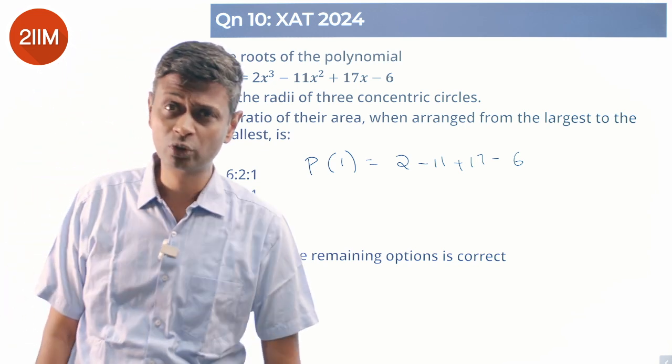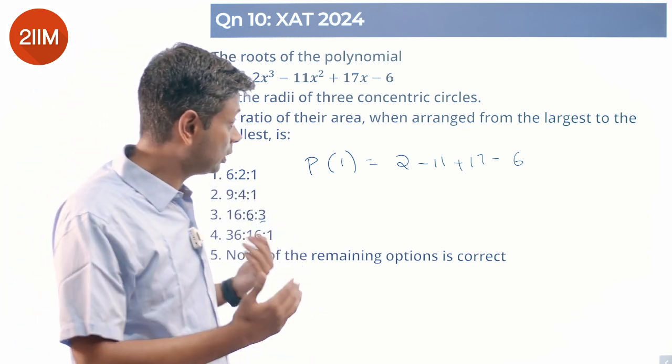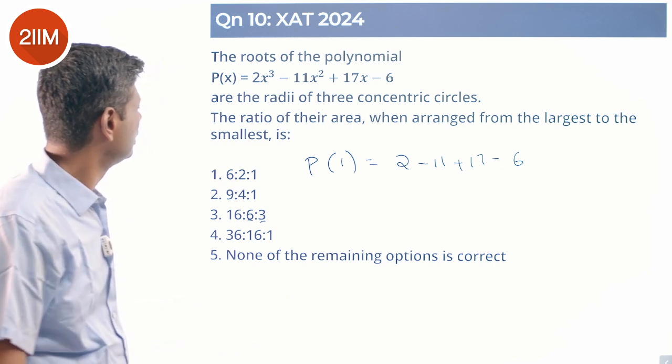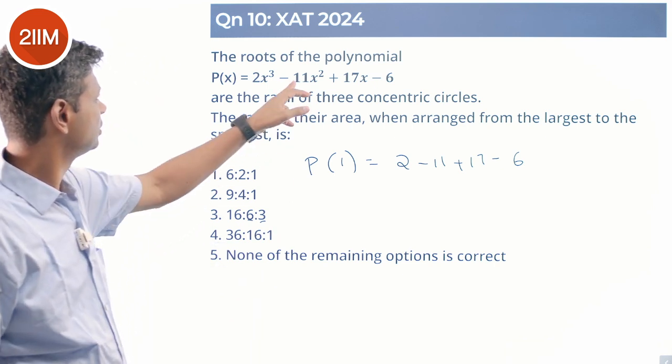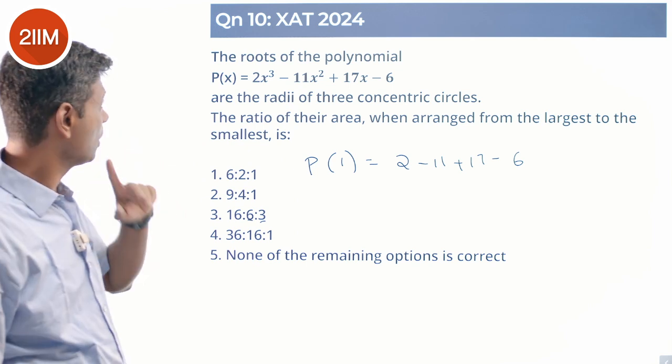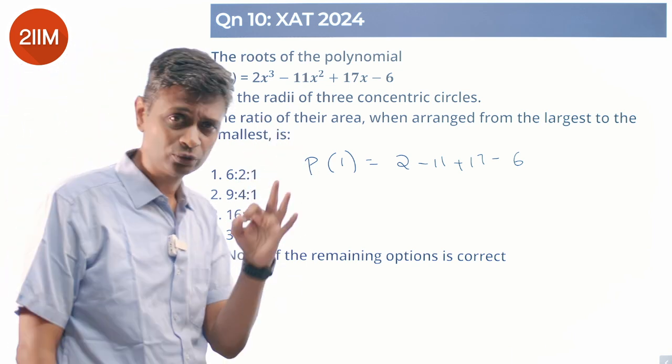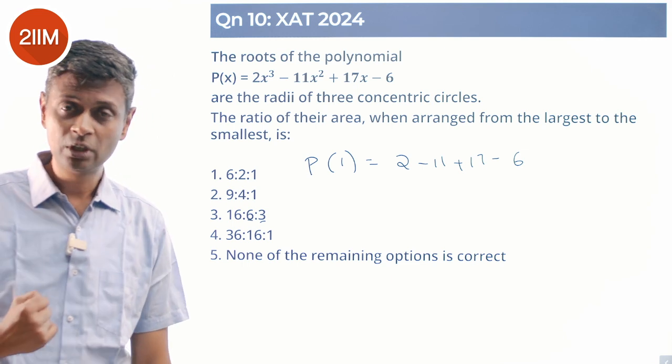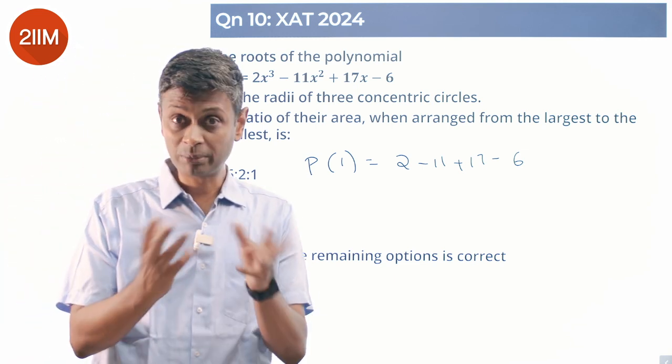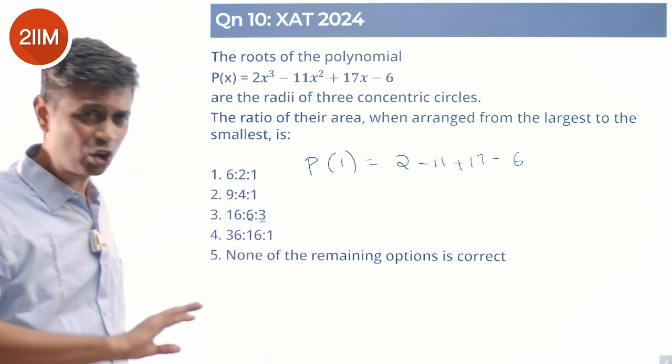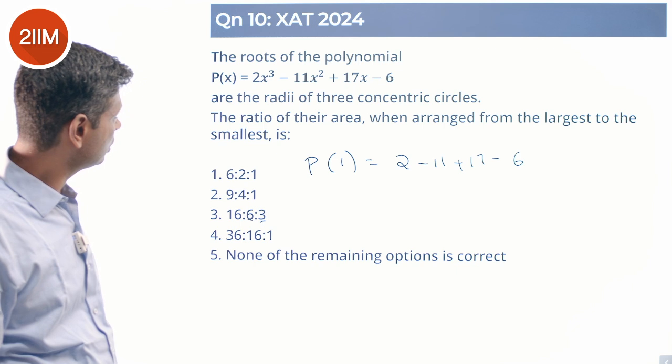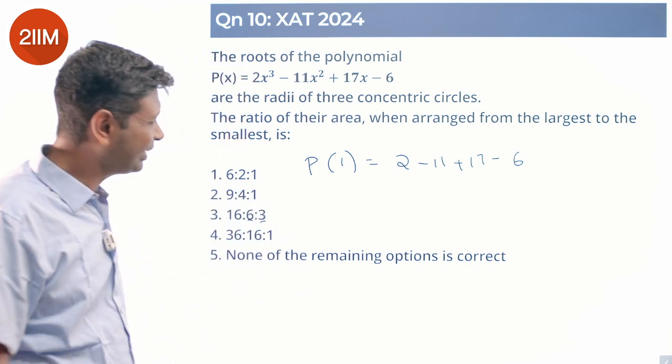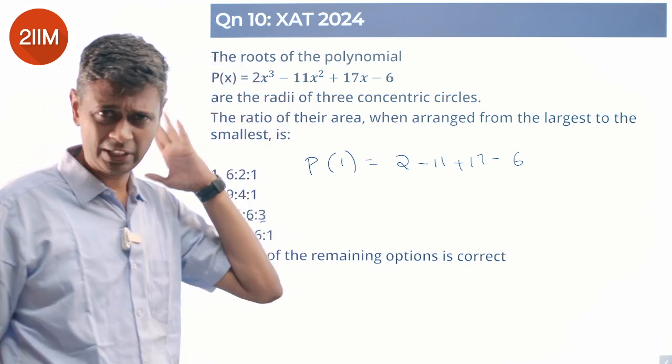Sum of the roots is 11/2. Product of the roots is 3. Maybe dealing with small numbers - product is 3, so maybe 3 is a root, maybe with 1/3 or 1/2 somewhere. Since the radii of three concentric circles should all be positive, 1 doesn't work. I'm going to try 2. 0 doesn't work, very clearly. Let me try 2.